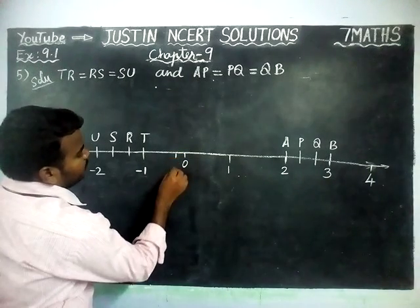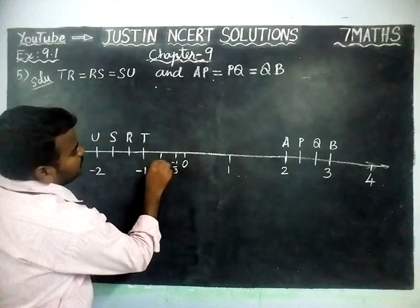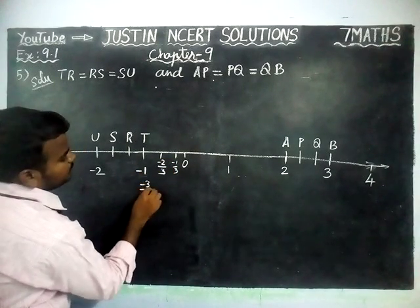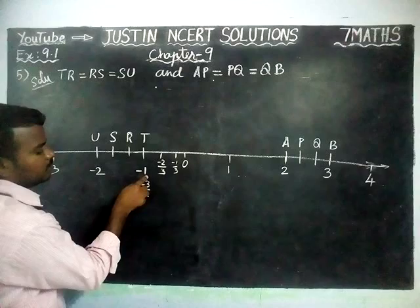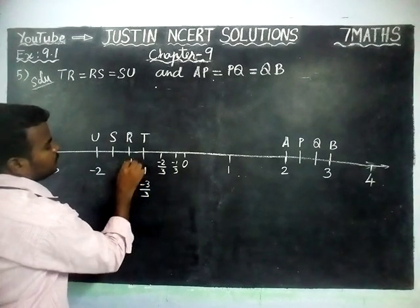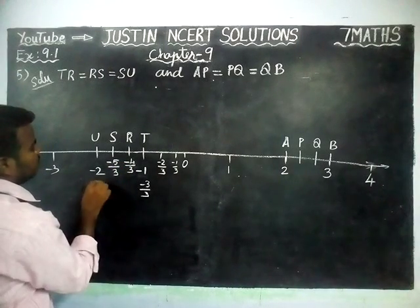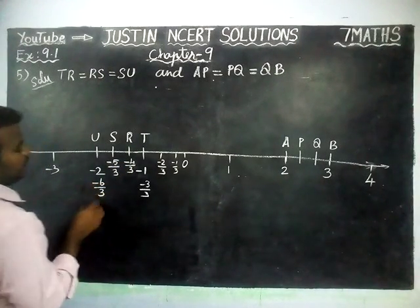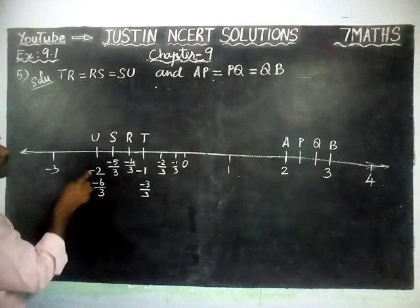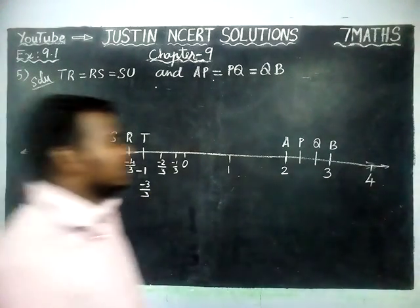So the number line is fully separated into three equal parts. On the negative side: this is minus 1 by 3, this is minus 2 by 3, and this will be minus 3 by 3, which equals minus 1. Then minus 4 by 3, minus 5 by 3, and minus 6 by 3, which equals minus 2, because 2 times 3 is 6.